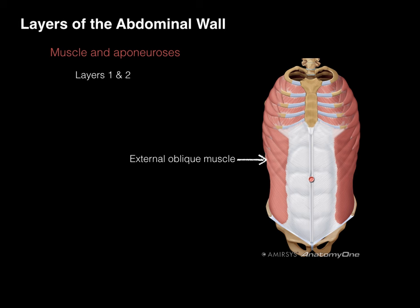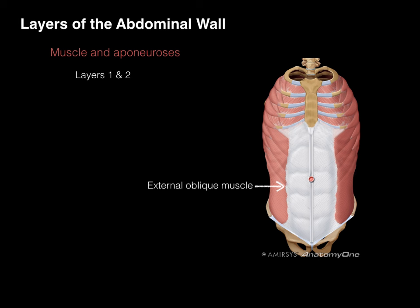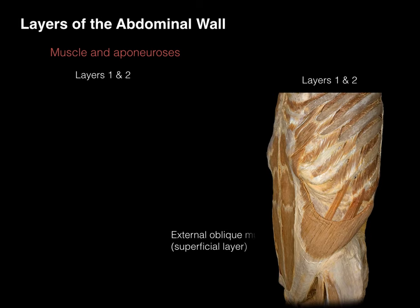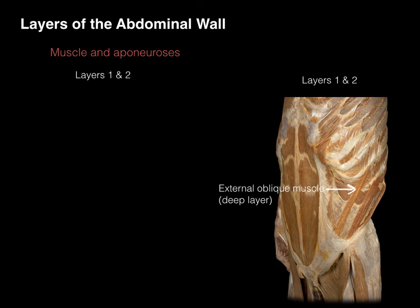There are four layers. Layers one and two are really just one muscle: the external oblique. The word oblique means at an angle, and external means outside. These muscle fibers course from the ribs downward, and the muscle stops near the midclavicular line. The external oblique aponeurosis is the anterior projection that goes to the very midline, connecting to the linea alba — the white line — knitting the external oblique aponeuroses from right and left together. Cadaver dissection shows this clearly as two layers.